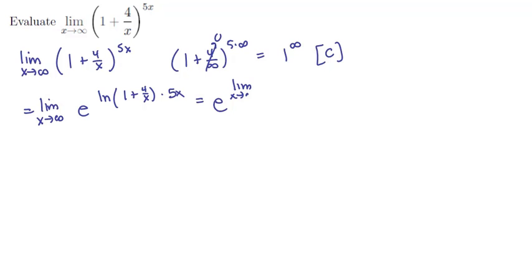We're going to have e to the limit as x tends to infinity of, rearranging, 5x times ln of 1 plus 4 over x, or 4 to the x, or 4 times x to the minus 1. Since I know we're going to be applying some calculus here, it's better to prep this thing. Let's bracket off this exponent and focus our attention on the limit up here.